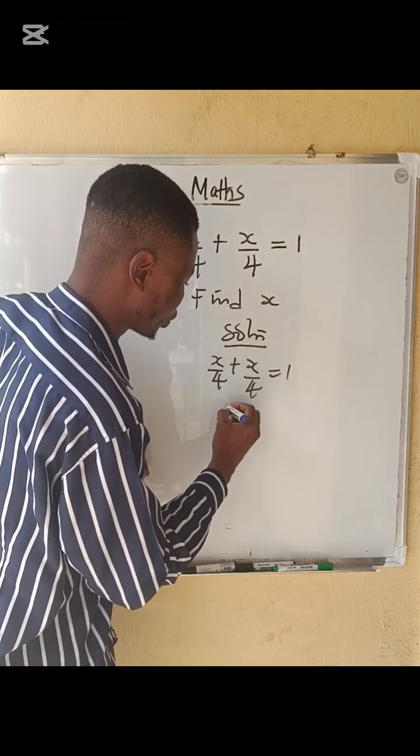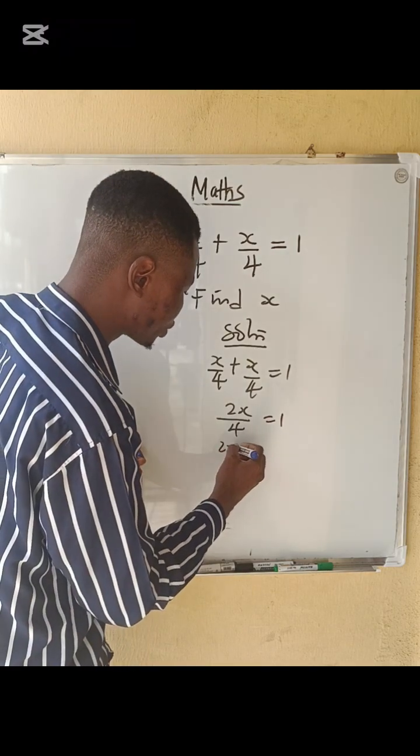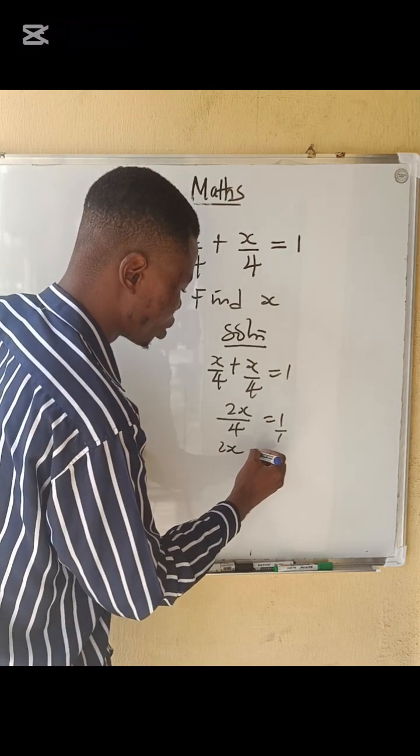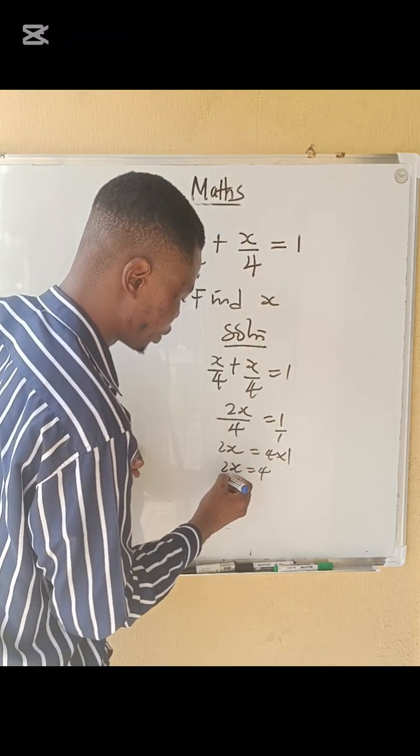Then add x. x plus x, that will give us 2x equals to 1. So 2x cross and multiply equals to 4 multiplied by 1. So 2x equals to 4.